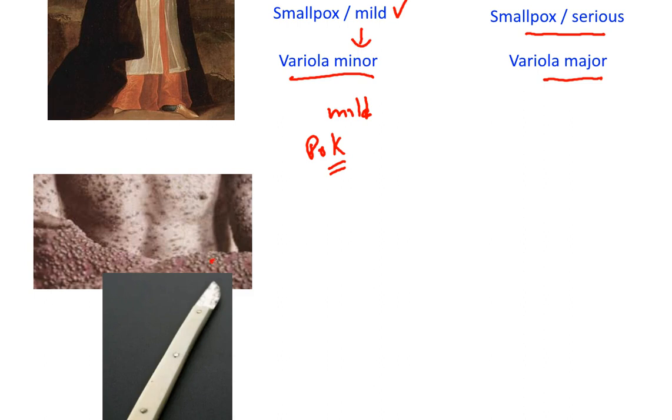Smallpox creates blisters, and in those blisters is pus and the disease-causing organism, the virus of smallpox. When a person has the mild version of the disease, the pus would be taken from the wound.